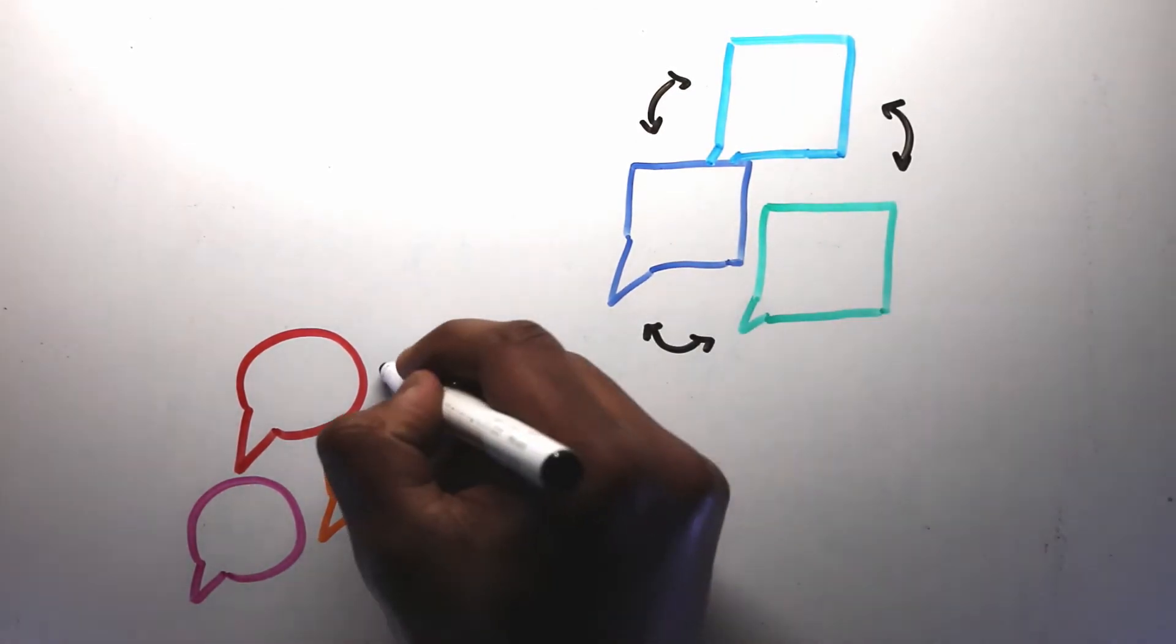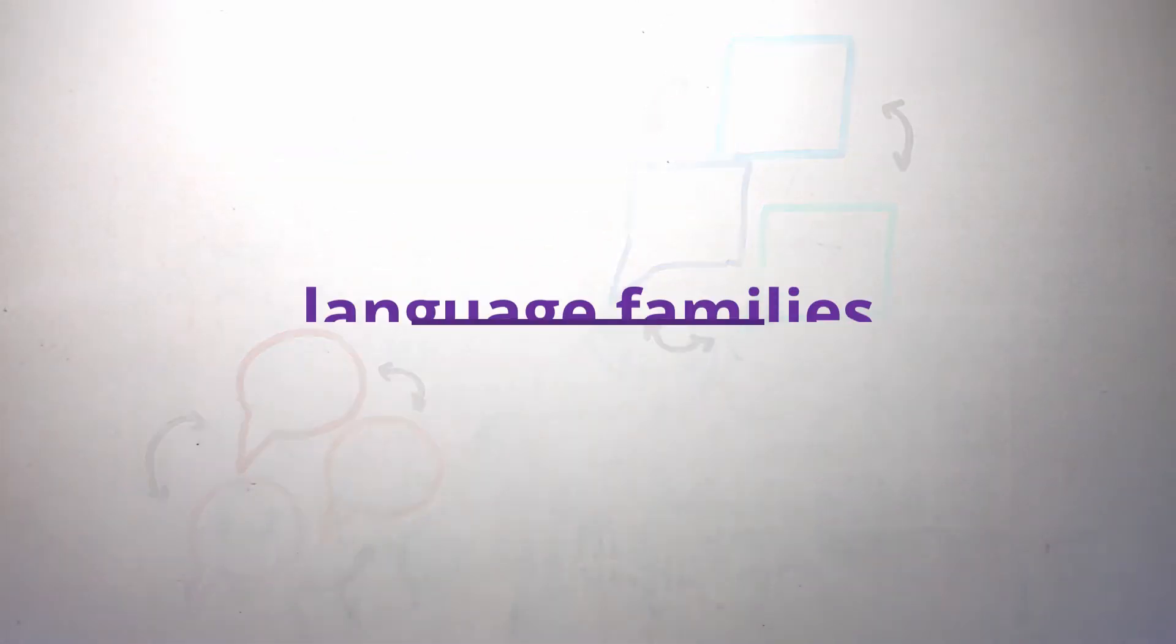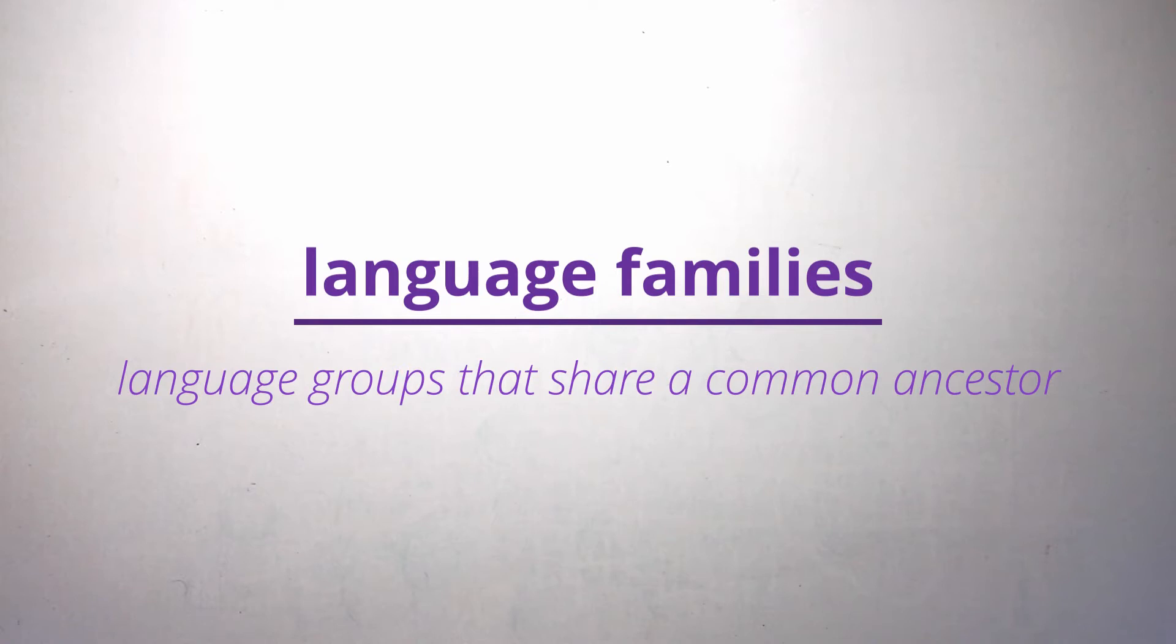Still, we see a lot of similarities between languages, especially those that are geographically close to each other. Why is that? This is because of language families, groups of languages that all come from the same ancestor. Here's how it works.